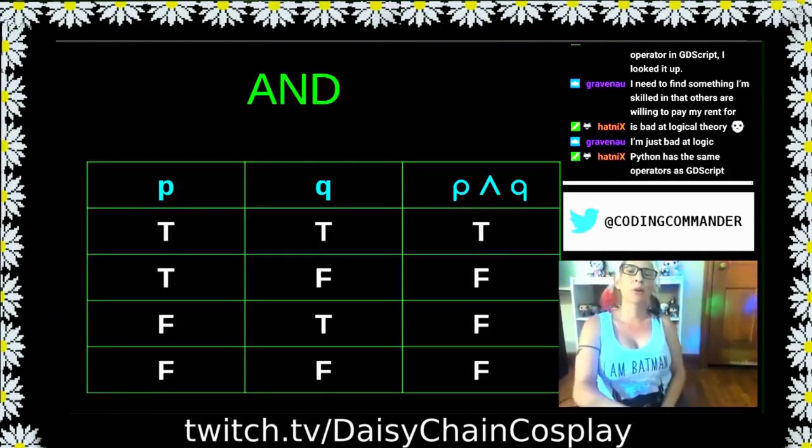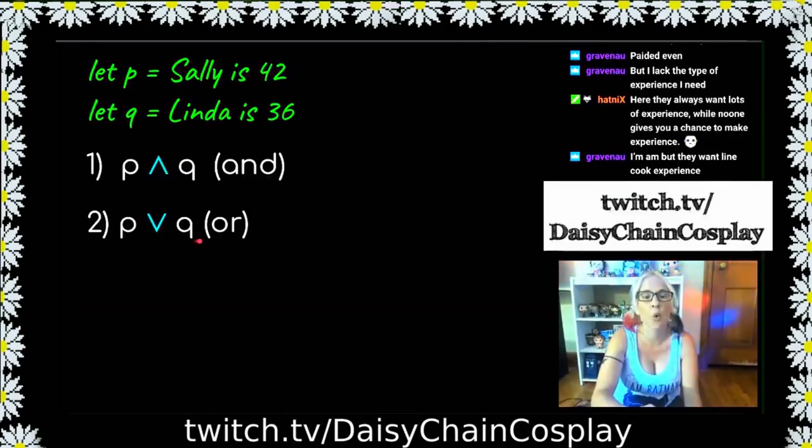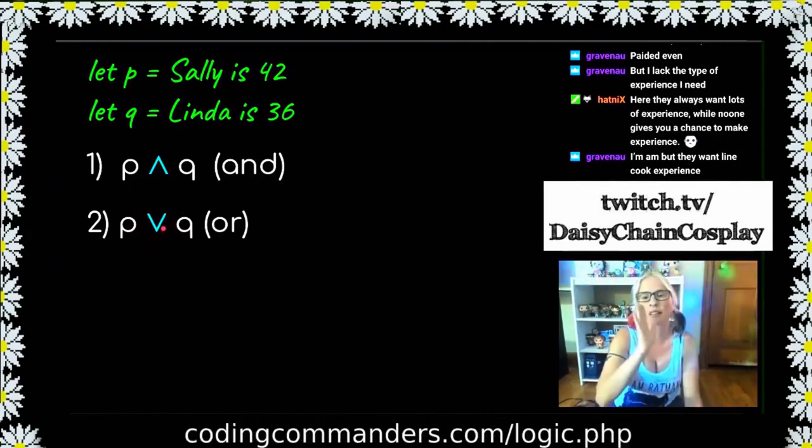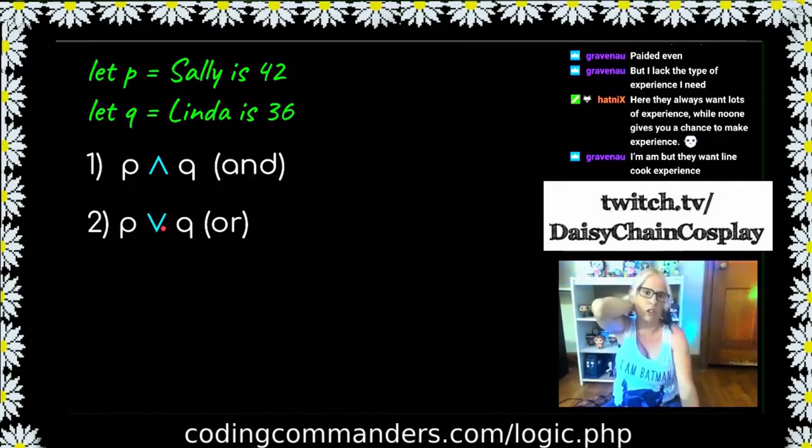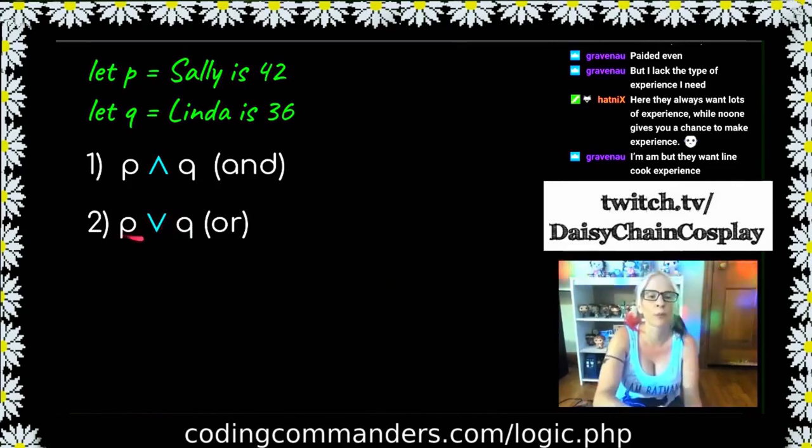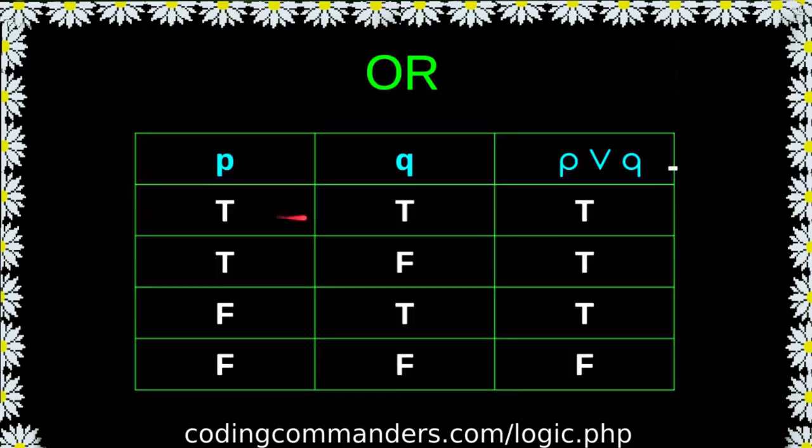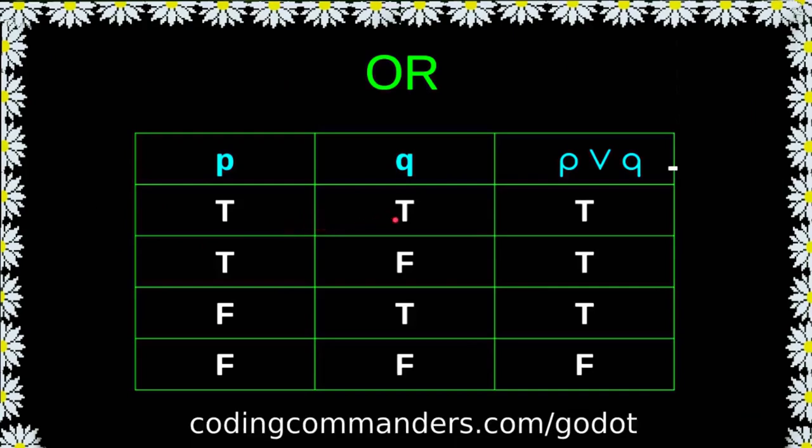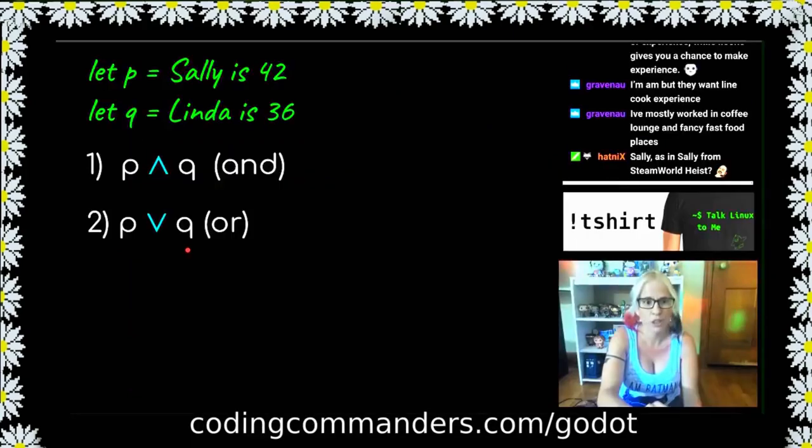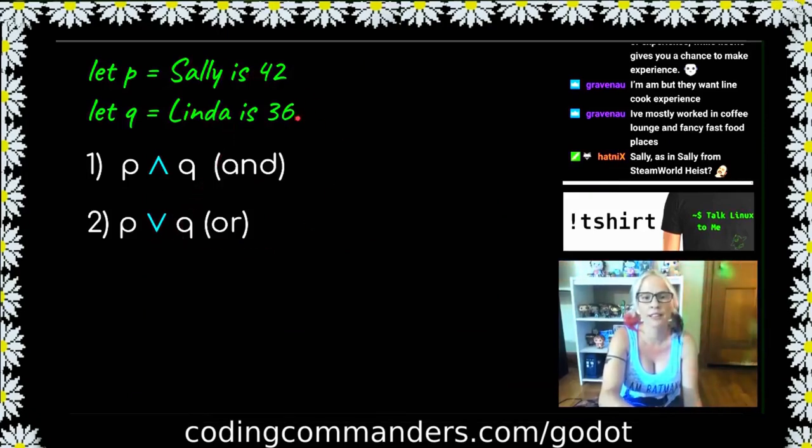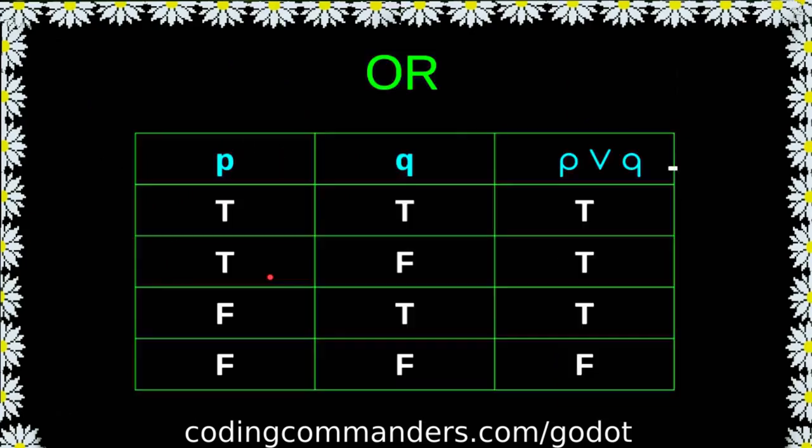Here's the truth tables. P or q. This symbol means or. It's like the pipe pipe in GDScript. In order for p or q to be true, p can be true, q can be true, or they both can be true. So if Sally's 42, this is true. If Linda's 36, this is true. If Sally's 42 and Linda's 36, this will also be true.